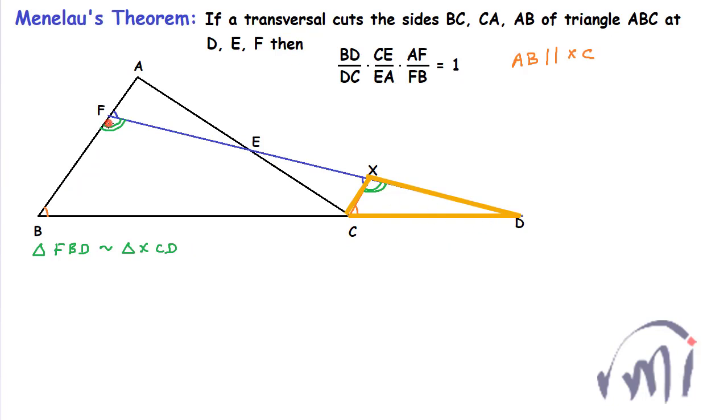Why? Because this angle is equal to this angle, this angle is equal to this angle, and this angle is actually common to both triangles. So the ratio of FB to CX will be equal to BD to DC. And similarly these two triangles, triangle EAF and triangle ECX,